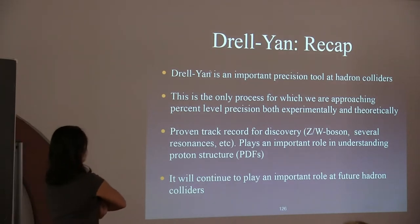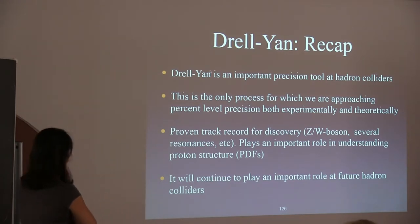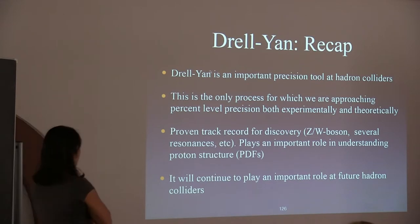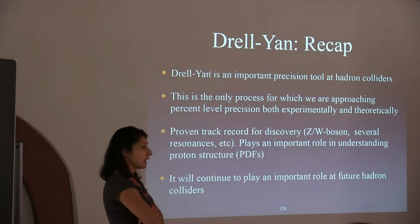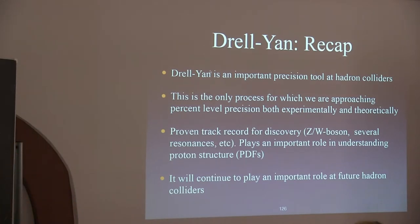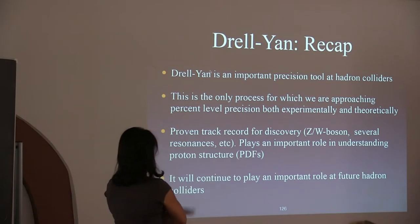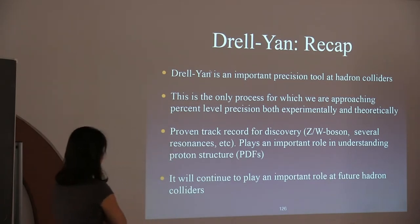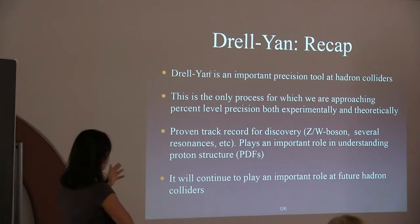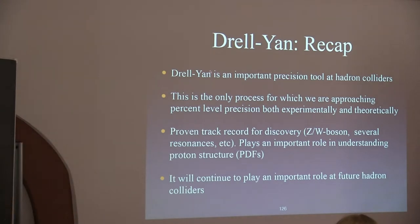In summary, Drell-Yan is an important precision tool at hadron colliders. It is the only process for which percent-level precision has been achieved on both the experimental and theory sides. It has a proven record for discovery — the Z, the W, and several resonances — and plays a crucial role in constraining PDFs. It will continue to play an important role at future colliders.